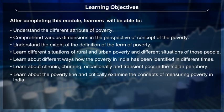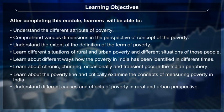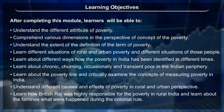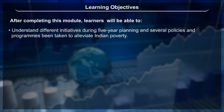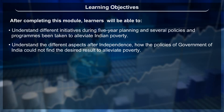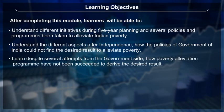Learners will also learn about chronic, churning, occasionally, and transient poor in the Indian periphery; learn about the poverty line and critically examine the concepts of measuring poverty in India; understand different causes and effects of poverty in rural and urban perspectives; learn how the British Raj was responsible for poverty in rural India, including famines during colonial rule; understand different initiatives during five-year planning; and learn how poverty alleviation programs have not succeeded in deriving the desired results.